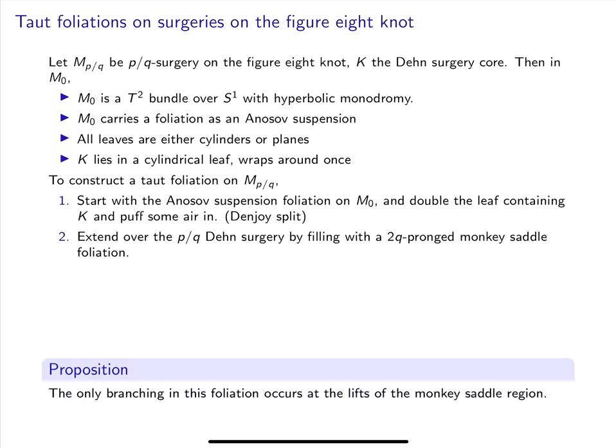Let's now see how to use monkey saddles to foliate surgeries on the figure 8 knot. We'll denote the P over Q surgery on the figure 8 by M sub P/Q, and K will mean the Dehn surgery core in M_{P/Q}. Now the zero surgery is a T² bundle over S¹, because the figure 8 knot has linking number 1, and the monodromy of the figure 8 knot is hyperbolic. So M₀ carries a foliation as an Anosov suspension, as we discussed earlier. Something special about Anosov foliations is that all leaves are either cylinders or planes.